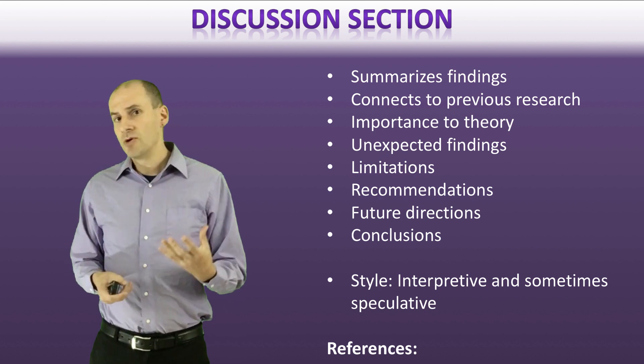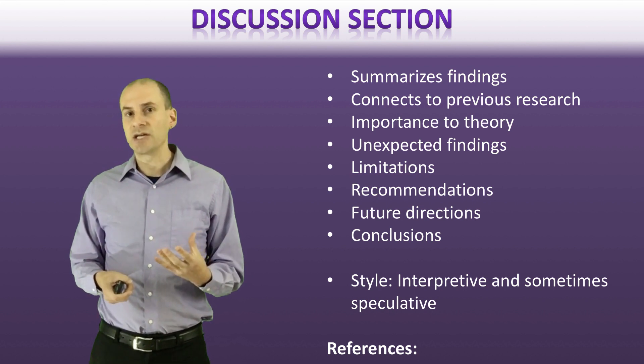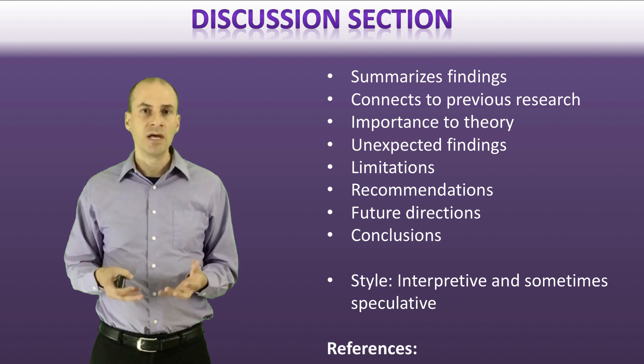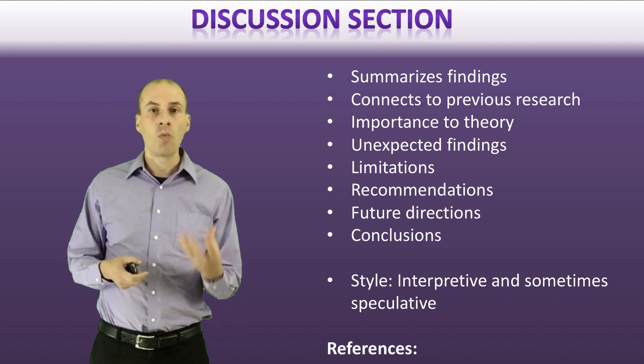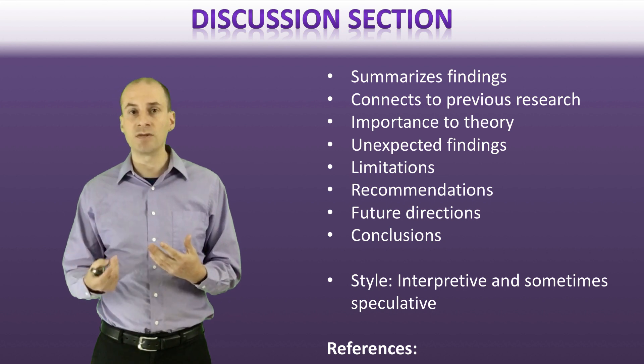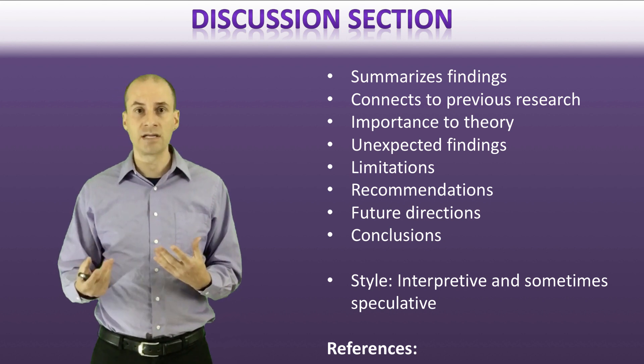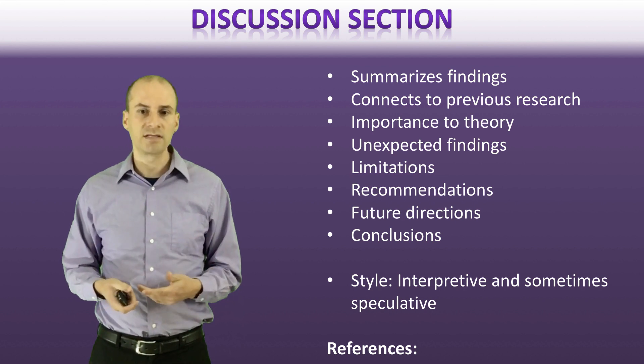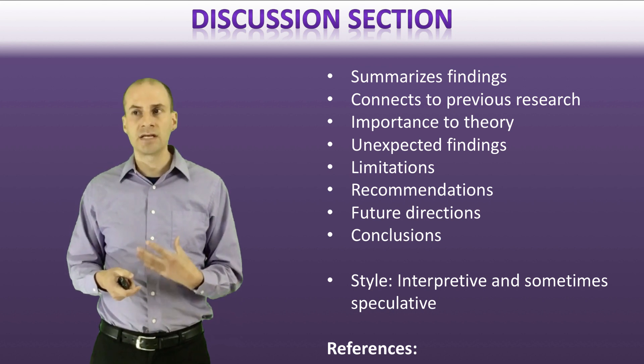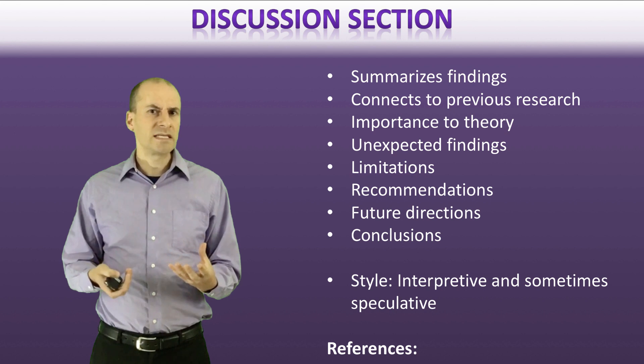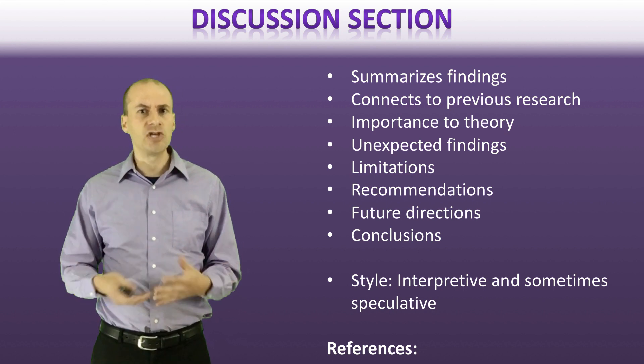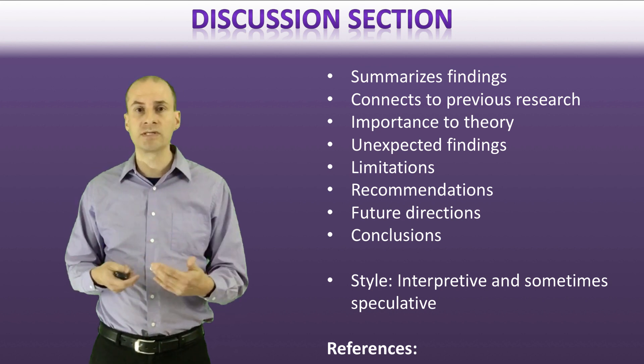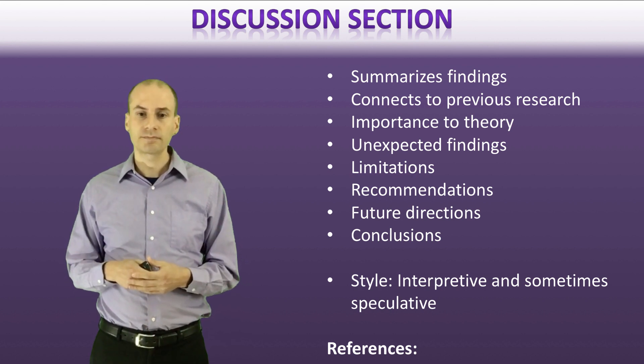Now one of the most important sections in the discussion section is they should also have a component which is essentially a limitations section. Sometimes it will be strengths and limitations. So they'll talk about what were the good things about their studies and what were the possible ways in which it might be limited in detecting certain things. As I'll talk about again, research always has limitations. There's no perfect studies. So the hope here is that the author has honestly presented to you what they see as being important constraints on how effectively you can apply this research in other contexts. What are the ways in which there might be problems perhaps with what was found in this study.